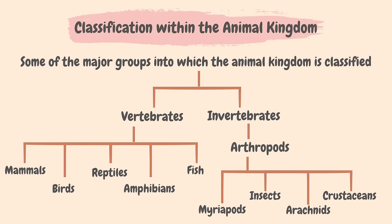Amphibians are vertebrates that live on both land and water. Some characteristics of amphibians are: they have moist skin without scales; eggs are laid in water; larvae live in water so they have gills; adults often live on land so they have lungs. Frogs and toads belong to this group. The last group of vertebrates is fish. All fish live in water except for one or two types. Fish have scales on their skin and they also have gills and fins.